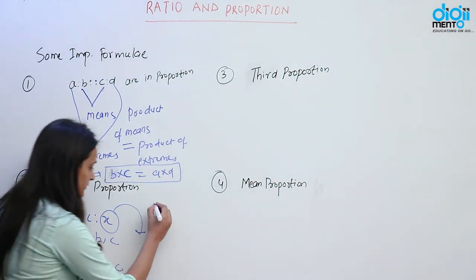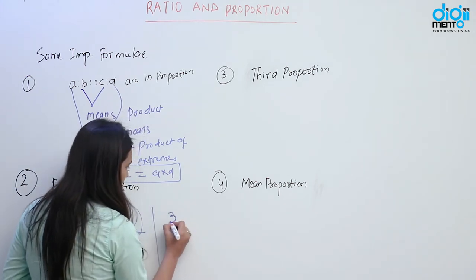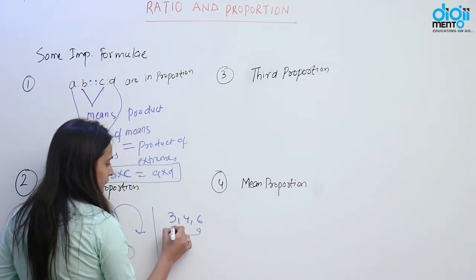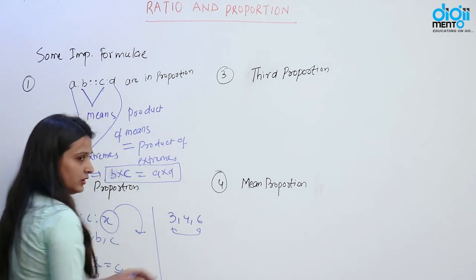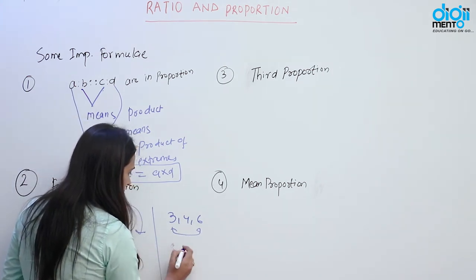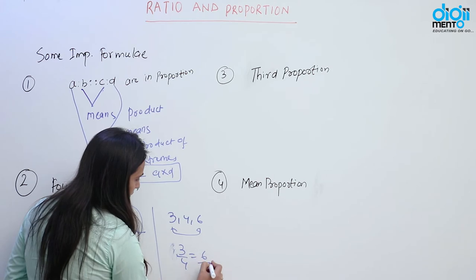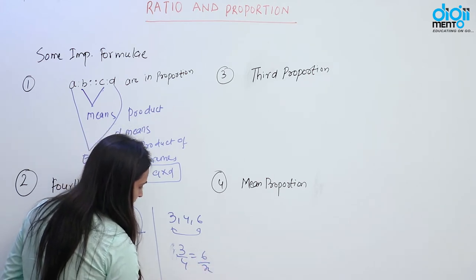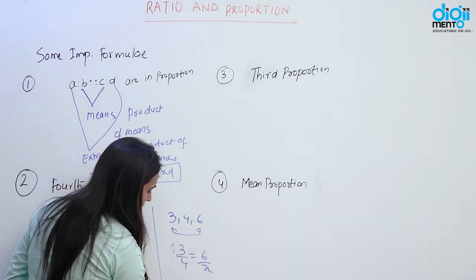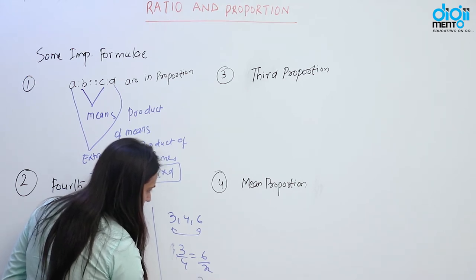Let us explain with the help of an example. Suppose we have 3, 4, and 6 and we have to find the fourth proportion. Fourth proportion can be found out by: 3 by 4 is equal to 6 by X. So X can be found out by 6 into 4 upon 3. That means X must be equal to 8.